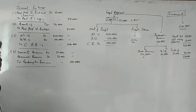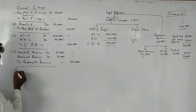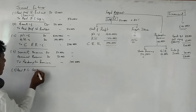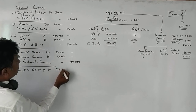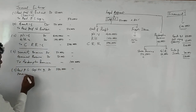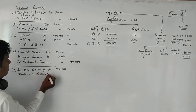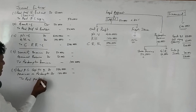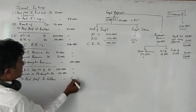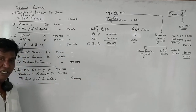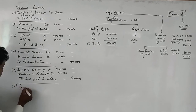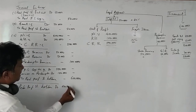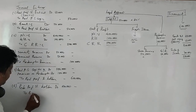Now that we have arranged the capital portion as well as the redemption premium portion, we transfer the preference share capital to the preference shareholders account: Redeemable Preference Share Capital Account Debit 5,00,000, Premium on Redemption Account Debit 1,00,000 — To Redeemable Preference Shareholders Account 6,00,000.